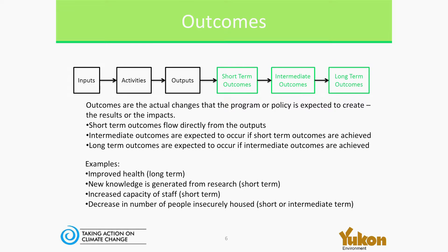For example, a typical chain might be producing knowledge or communicating knowledge so that people will learn something, and then change their behavior based on that learning, so that they'll eventually see positive longer-term results, such as improved health or well-being.